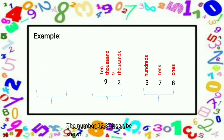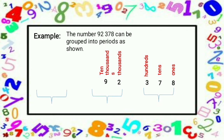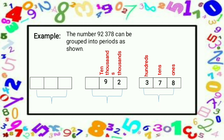I have here an example. The number 92,378 can be grouped into periods as shown below. We have here the first period, which is the ones, tens, and hundreds. That is the first period. And the second period is the thousands and ten-thousands. So we have here the digits 9 and 2.